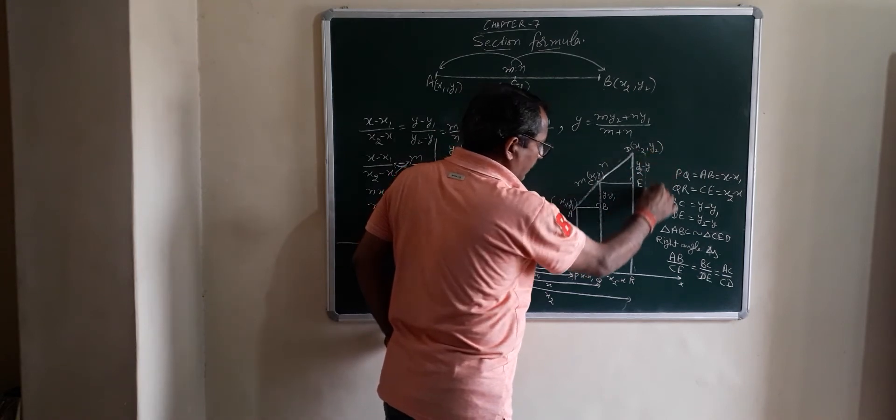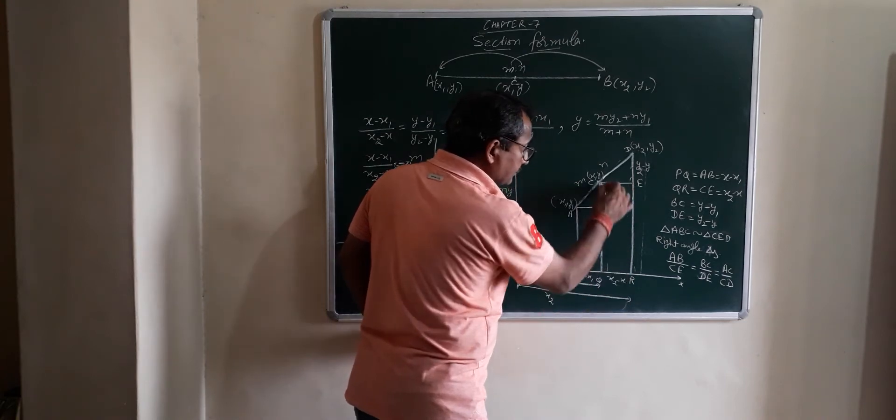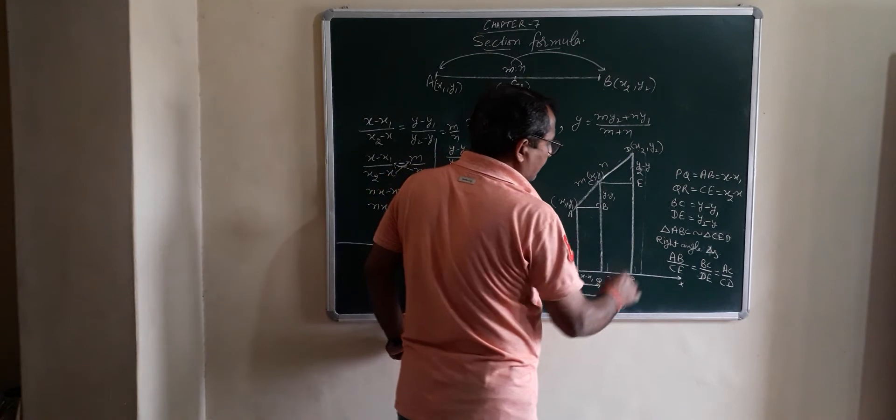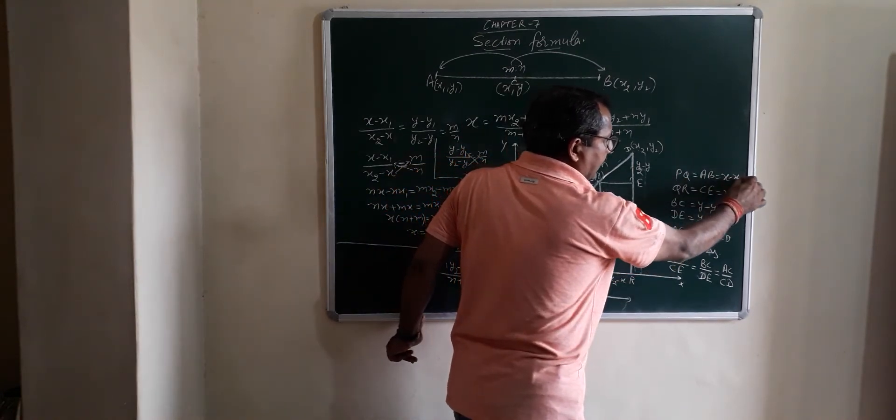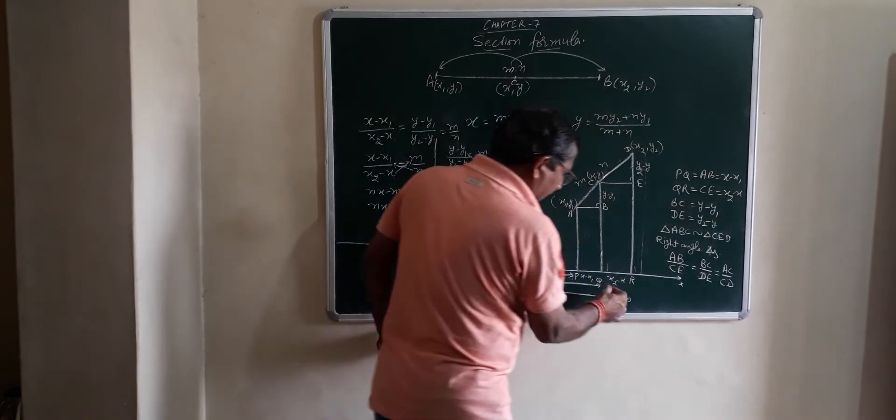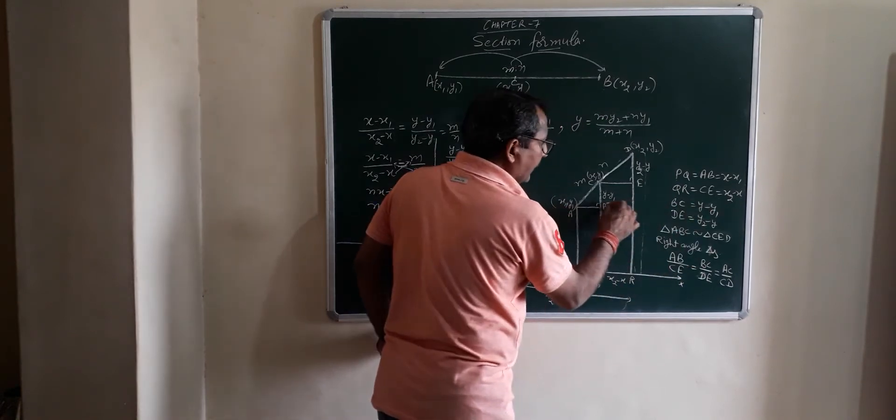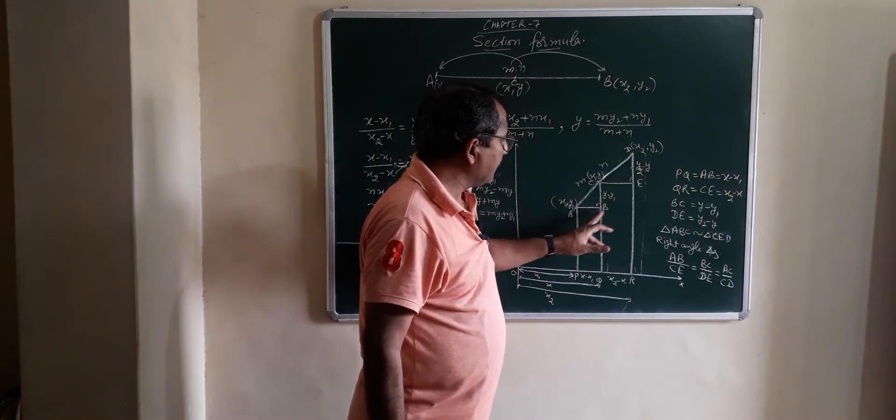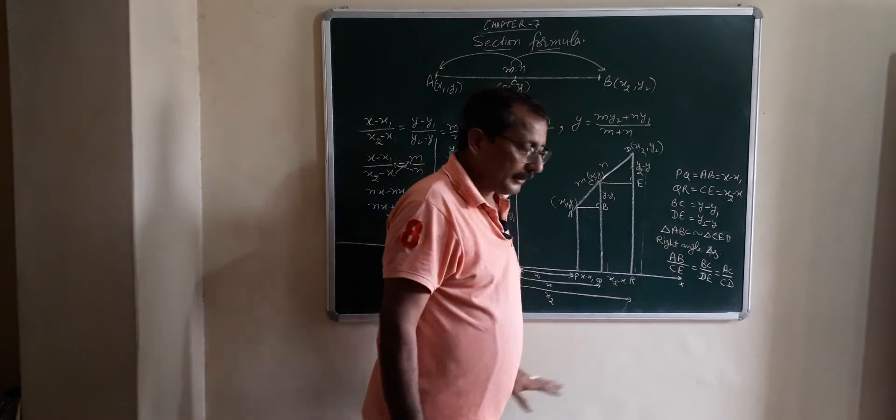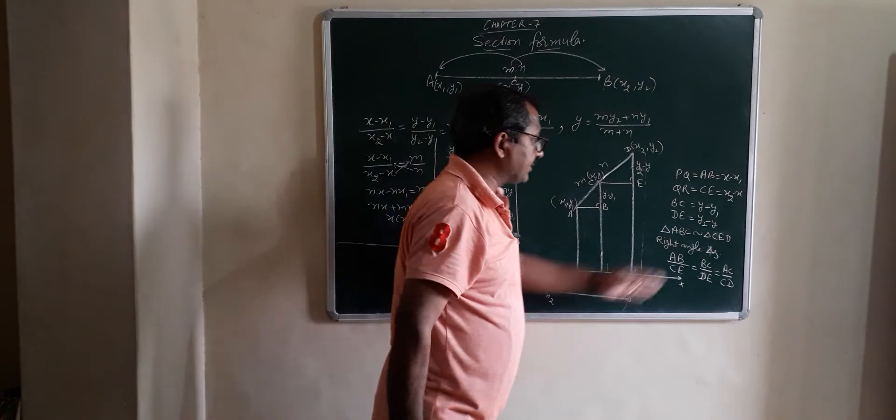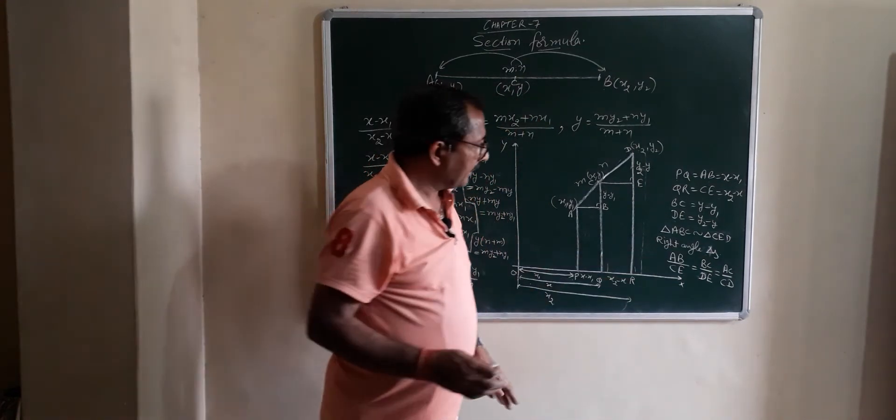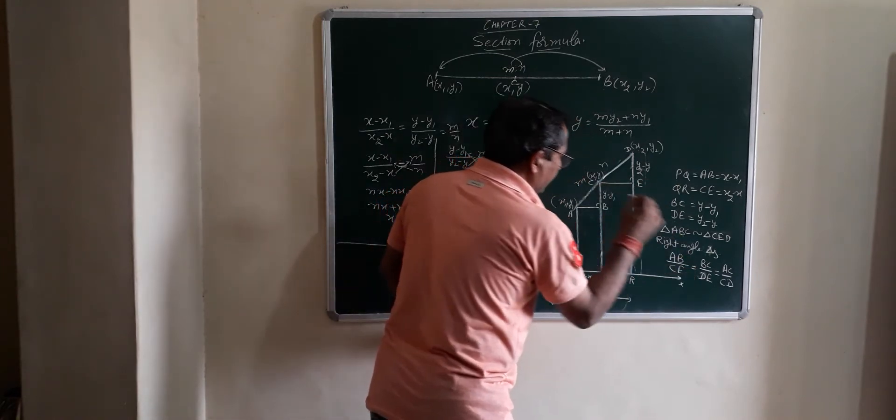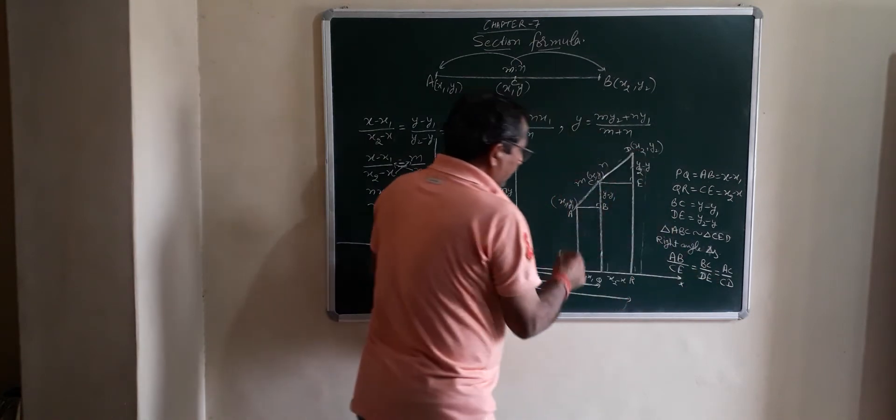DE find out, the distance here to here is Y minus Y1. BC is equal to AB X minus X1. QR is equal to CE is equal to X2 minus X1. BC is equal to Y minus Y1 and DE is equal to Y2 minus Y1. Now triangle, right angle triangle, they are similar. Right angles, they are similar.